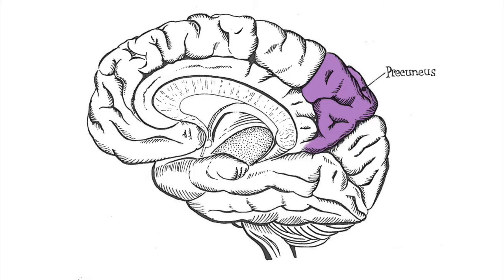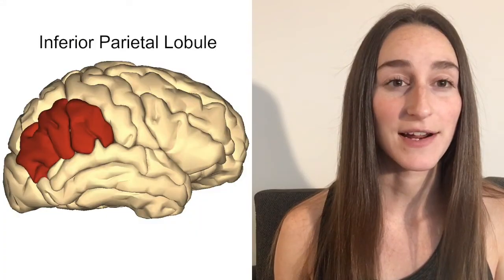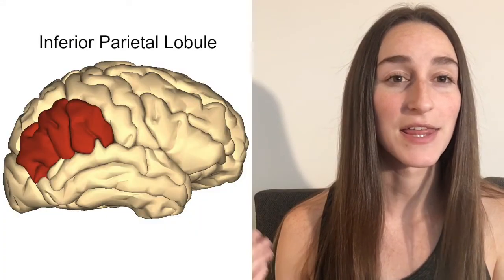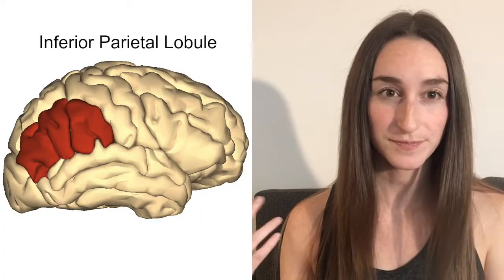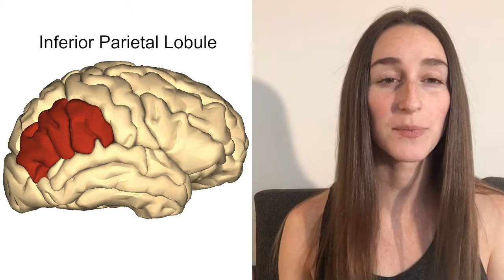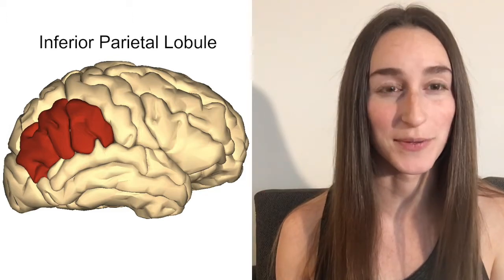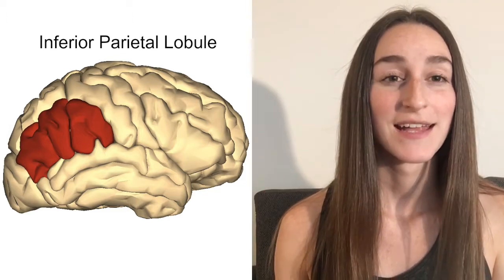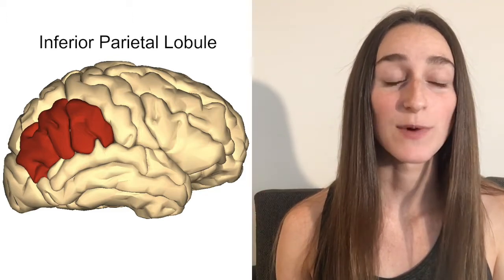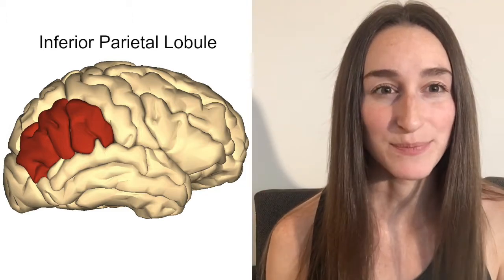The next area is the precuneus, and this is where third-party perspective taking takes place. The third area is the inferior parietal lobule — this is where empathy takes place.